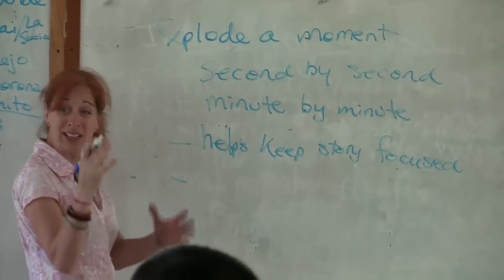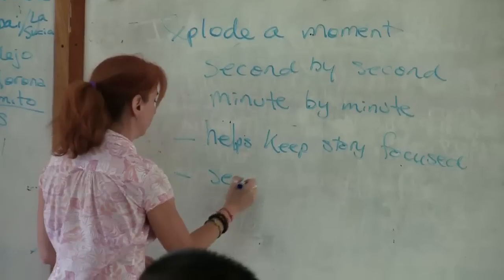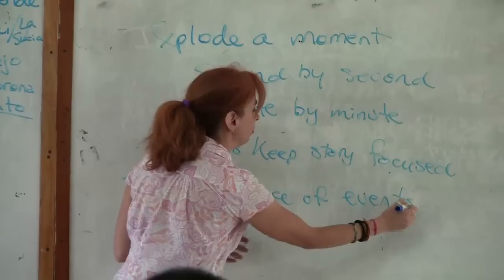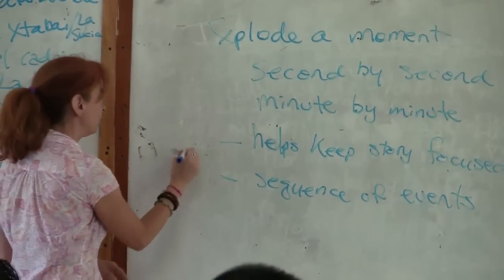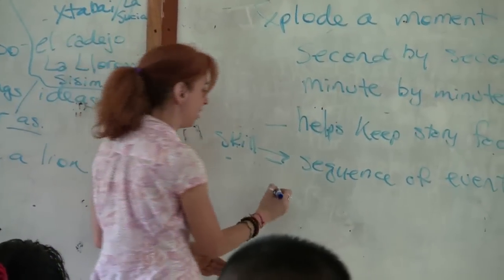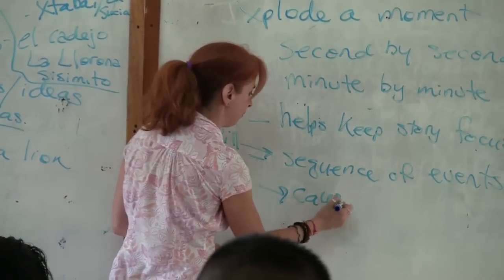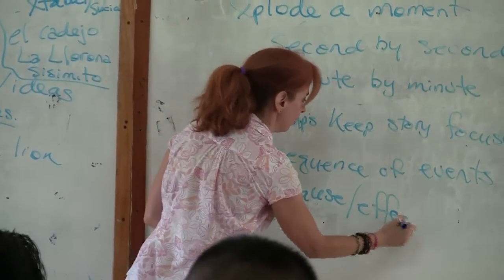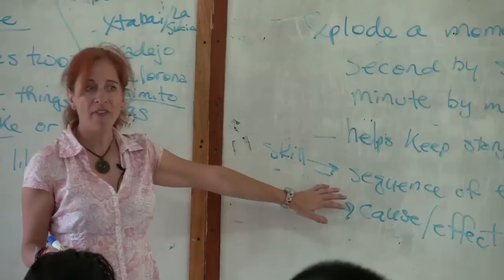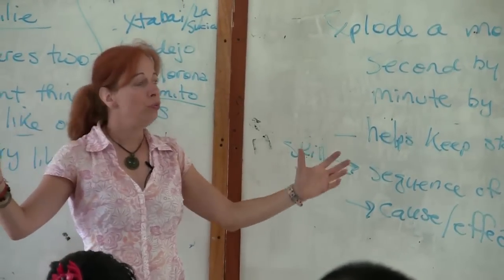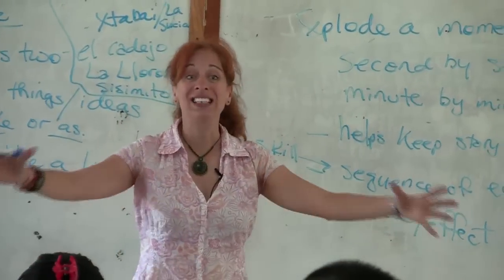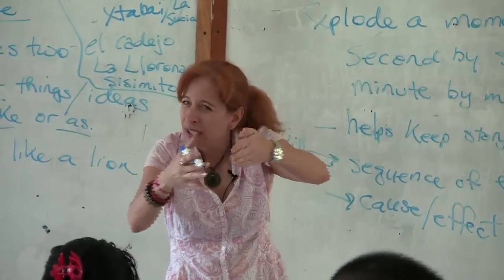It helps with sequence of events. So these are the skills — sequence of events, and cause and effect: if something happens, the effect of that. This is really what makes it an effective teaching tool, because often with writing — not only students, I sometimes do this too — trying to say too much and not being able to focus in on the idea.